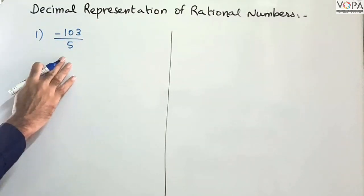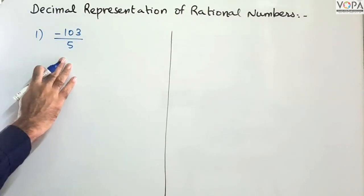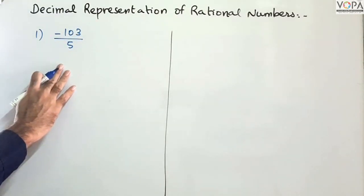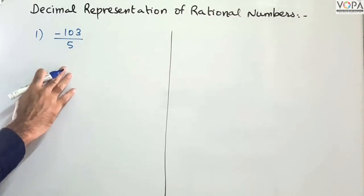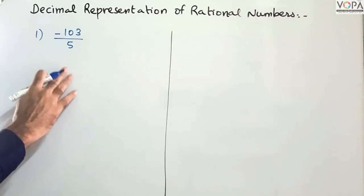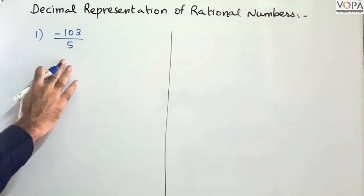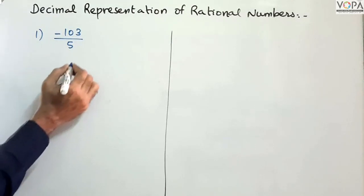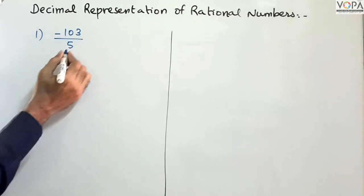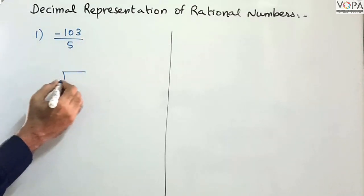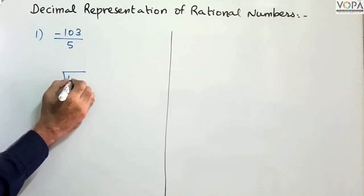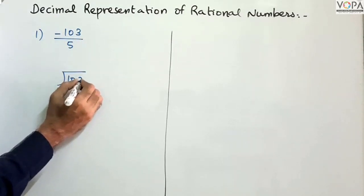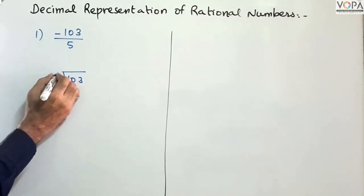This is a given rational number. First of all, we will write it in decimal form. In decimal form, we will divide negative 103 by 5. So first of all, we will divide 103 by 5.